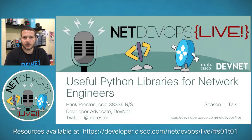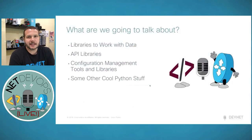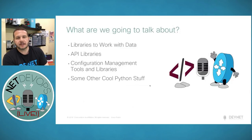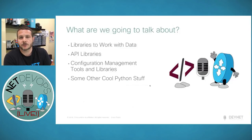Without further ado, we're going to jump right into this first episode. We're going to go through four basic types of libraries. We'll start out with libraries to work with data and data formats. As network engineers, we have to work with different types of data depending on the APIs or the source files we're working with, so we'll explore some of the common ones.